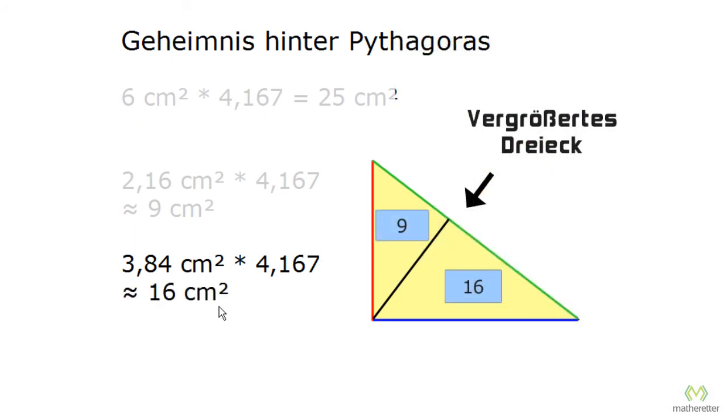And if you remember now, you see that the whole triangle is 25 square centimeters, the left triangle is 9 square centimeters, and the right triangle is 16 square centimeters. And we recognize that the areas of the triangles correspond exactly to the areas of the squares of the smaller triangle.